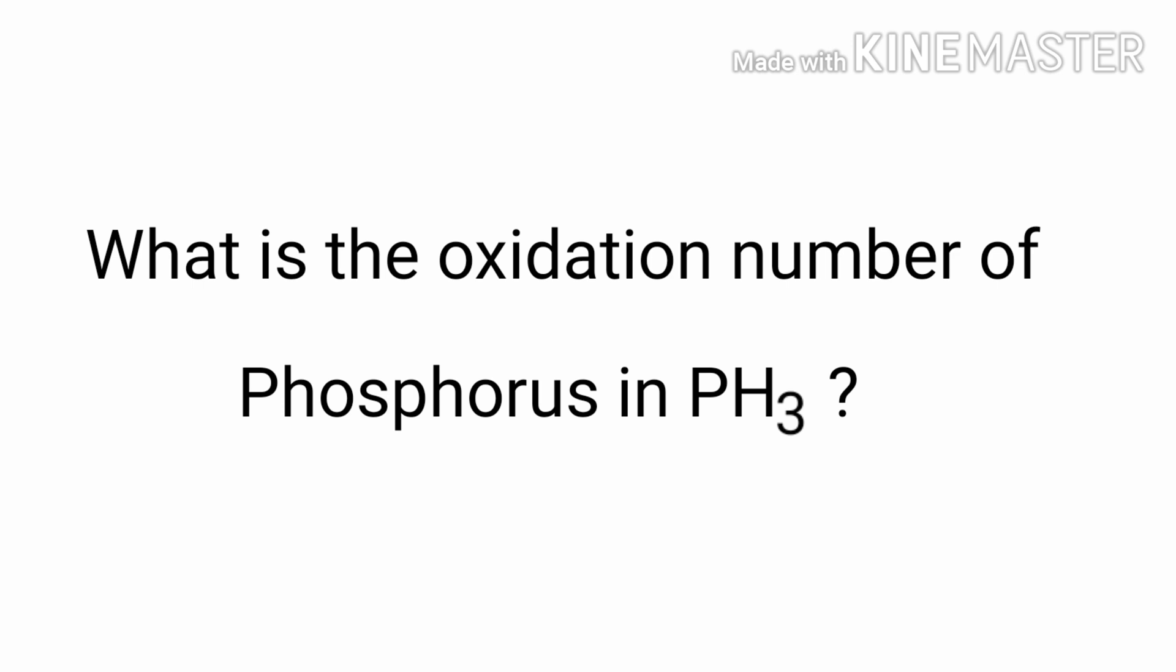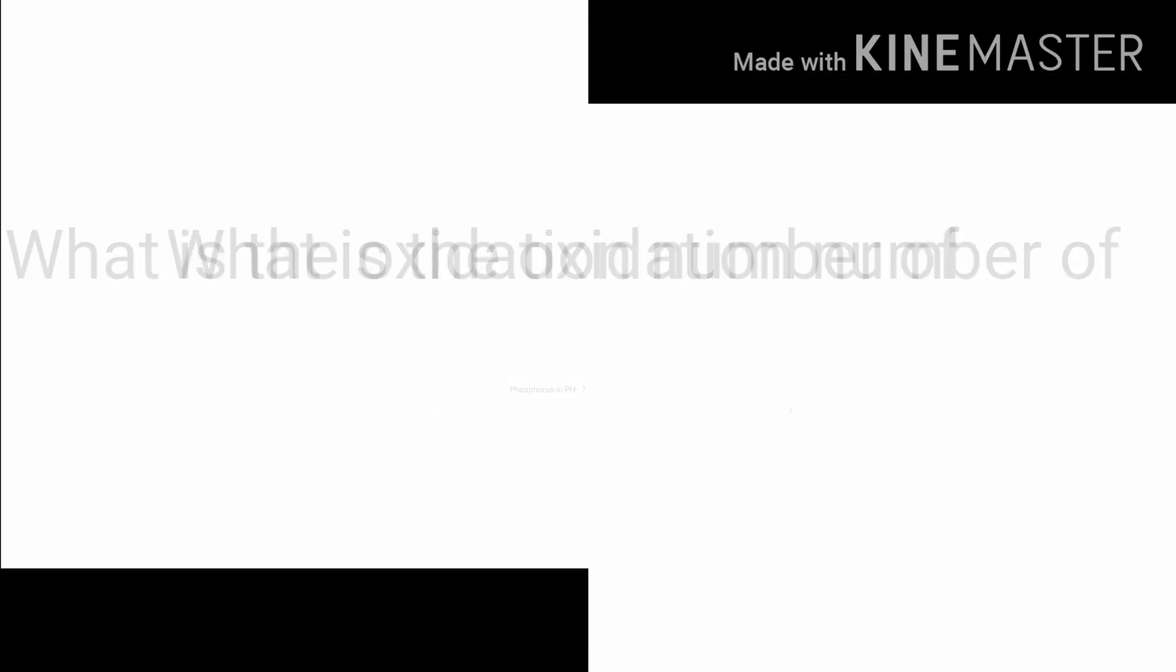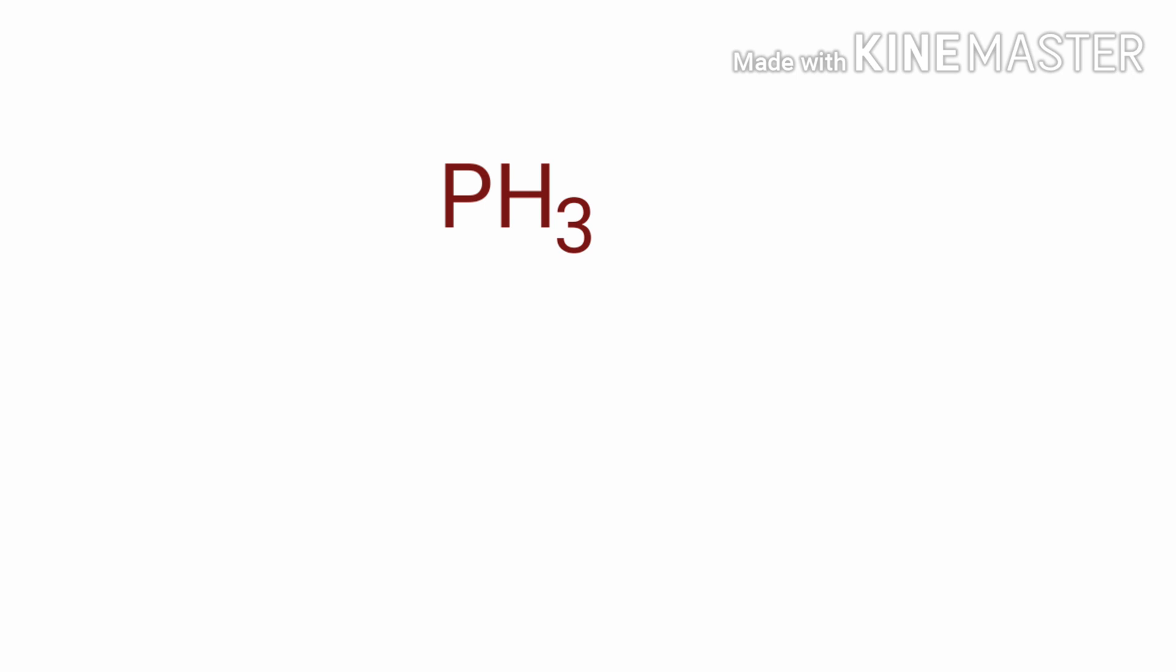What is the oxidation number of phosphorus in PH₃? We can use the oxidation number rules to determine oxidation numbers. PH₃ is a neutral compound with overall oxidation number 0.